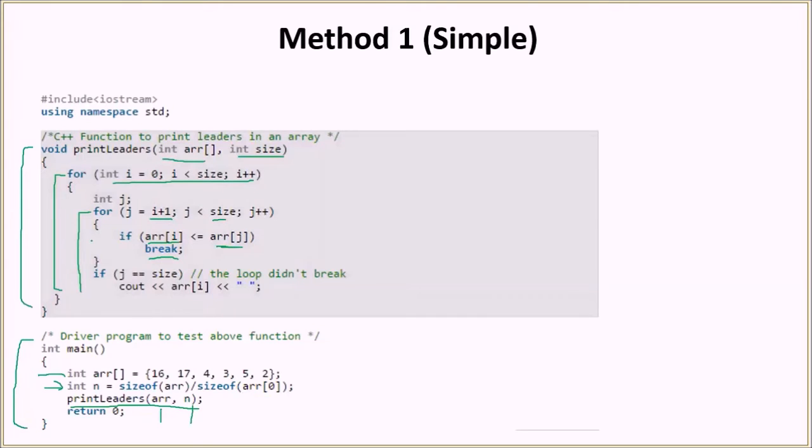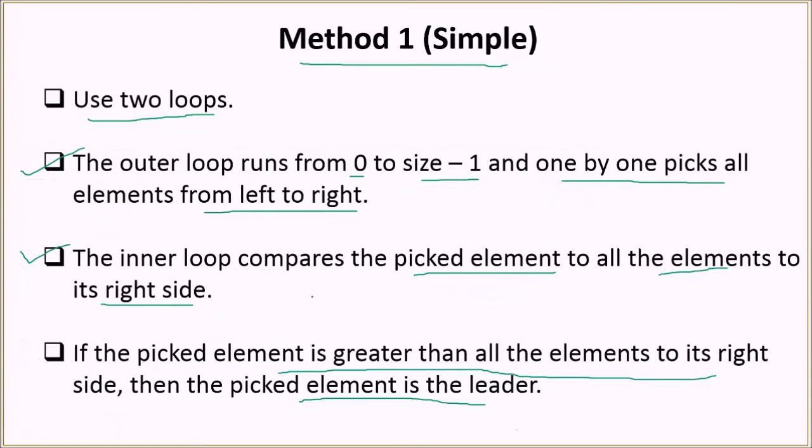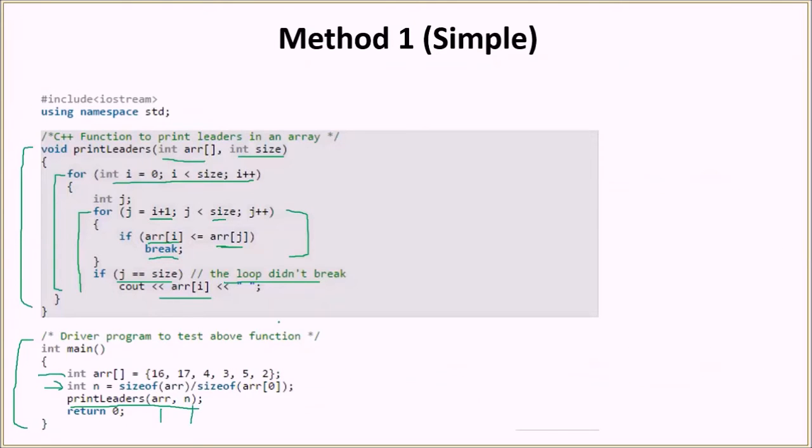So then after this for loop here, we are basically checking the value of j. If it's equal to size, that means that the loop didn't break. Then we print that element saying that it's a leader of the array. So the time complexity of this algorithm will be order of n square because we are running two loops here which are nested inside one another. And it's a brute force algorithm, so that is not a recommended way generally to solve a problem.